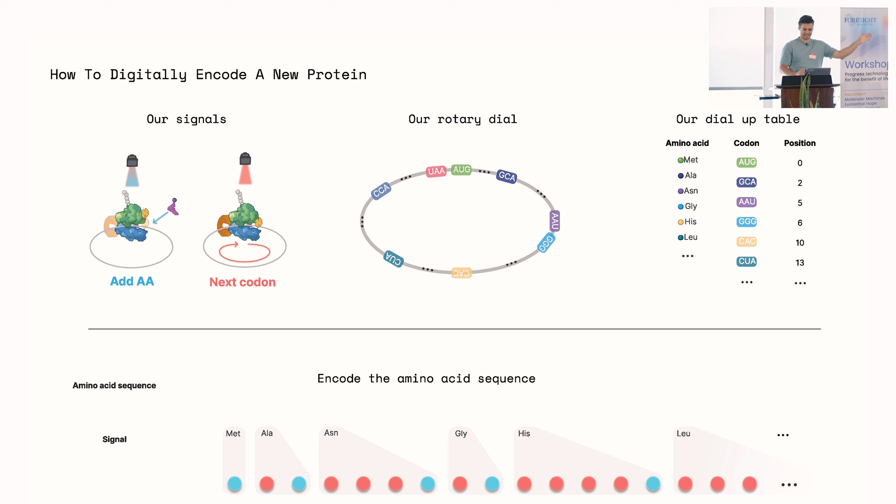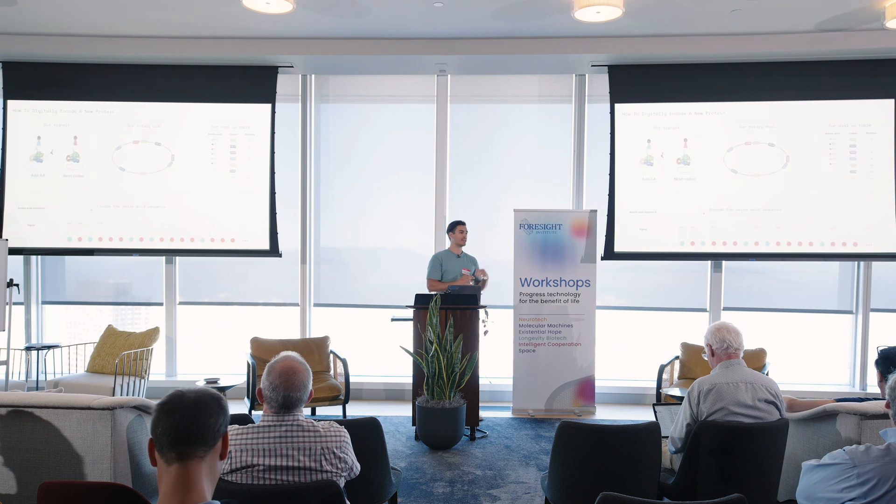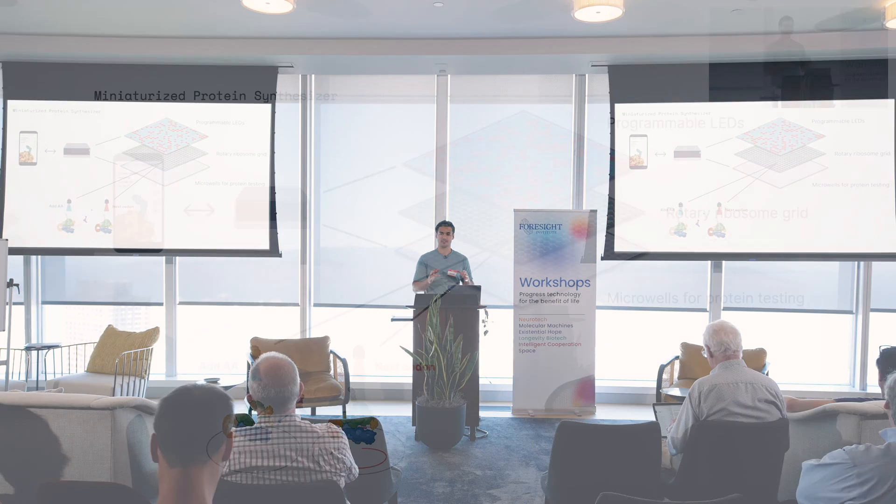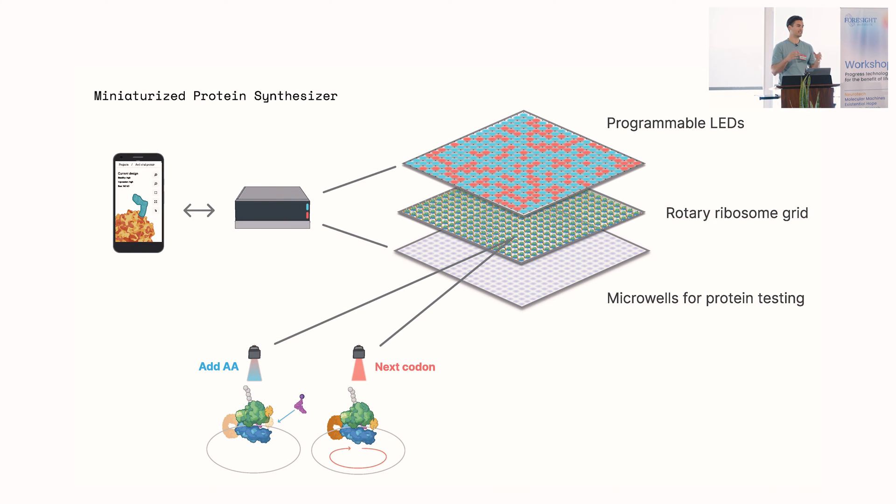Like I said, we're going to get to all the problems that are in there. But basically, that was the idea. Digitally encode proteins without having to use DNA. And then you could put this basically into a miniaturized protein synthesizer. Where you just have a grid of programmable LEDs. They can be very small. If you look at the OLED feature sizes that we have currently. Then a grid of these rotary ribosomes where we immobilize them. And then underneath a grid of microwells where we can do actual functional protein testing. And then in something like a box smaller than a smartphone. We could basically produce like millions of potentially billions of proteins in parallel. And test them for their function. And iterate quickly towards new protein designs. So that was the whole basically speculative exercise of designing this protein printer.